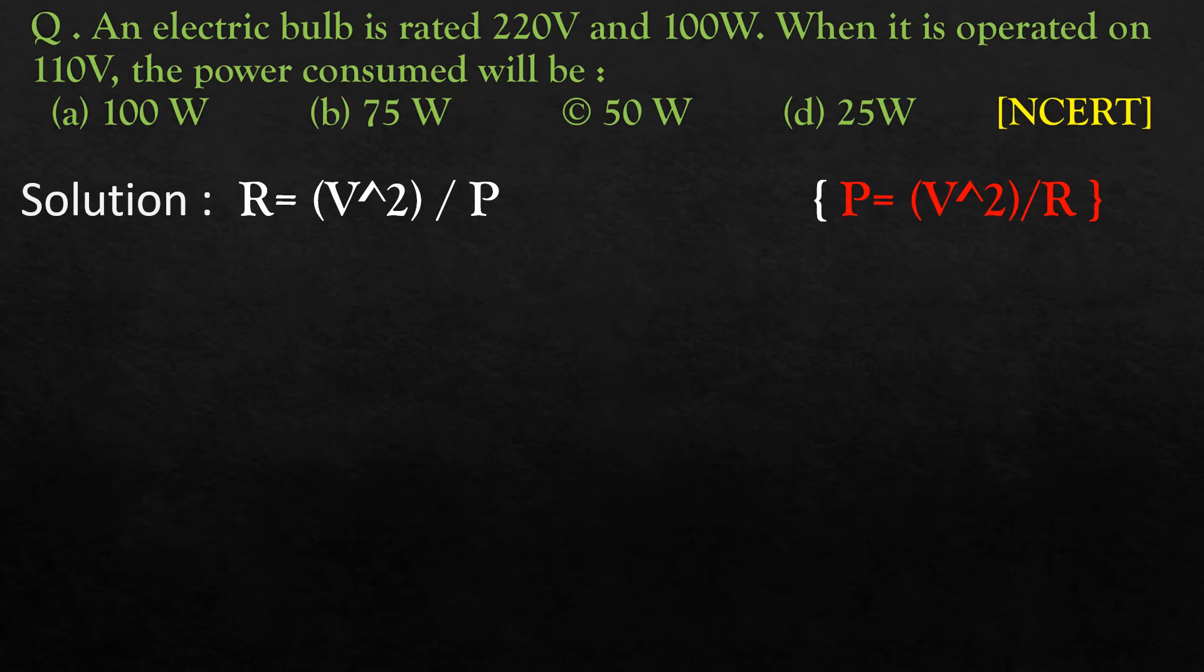We'll calculate the resistance now. R is equal to voltage which is 220 into 220 squared divided by power given as 100 watt. 220 into 220 divided by 100, the value we get is 484 ohm.